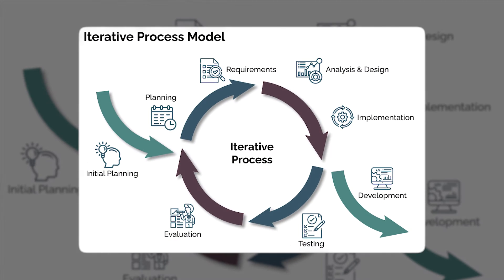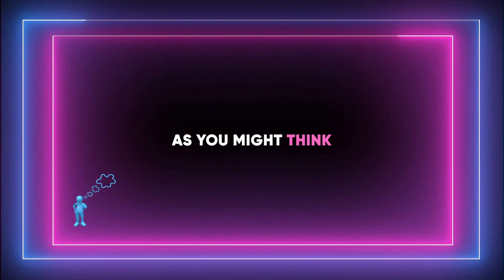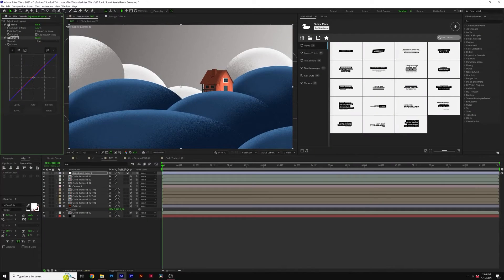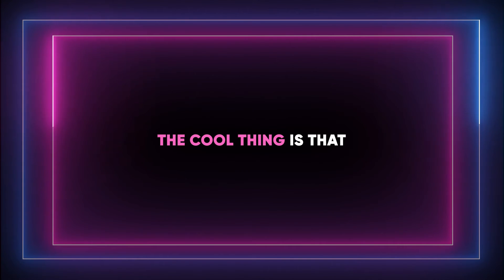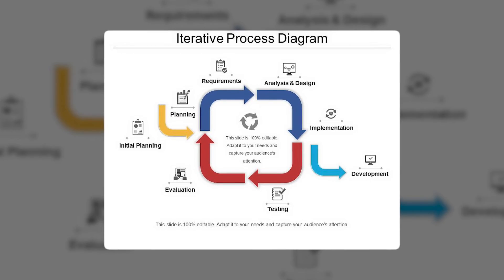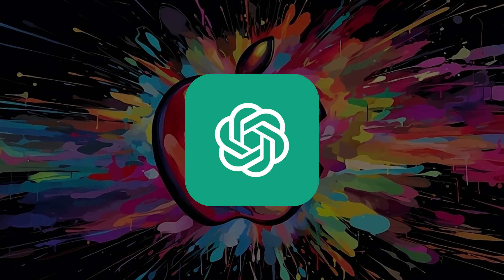The iterative design process employed by Keyframer allows users to refine their animations through successive, prompt-driven adjustments, with each iteration moving closer to their creative vision. Keyframer integrates user feedback at every stage, ensuring that each design iteration reflects the user's intent while aligning with professional standards of animation quality. This approach grants users granular control over the animation process, empowering them to make precise adjustments critical for creative refinement. The iterative process becomes a dialogue between the user and Keyframer AI, with the tool's suggestions and the user's feedback looping in a constructive cycle.